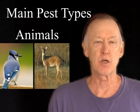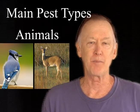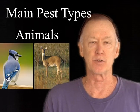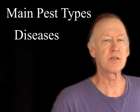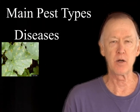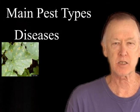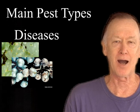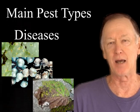Birds and deer are the most common type of animals that love to eat berries. The diseases include cane mildew, fungus, black rot, and leaf spot.